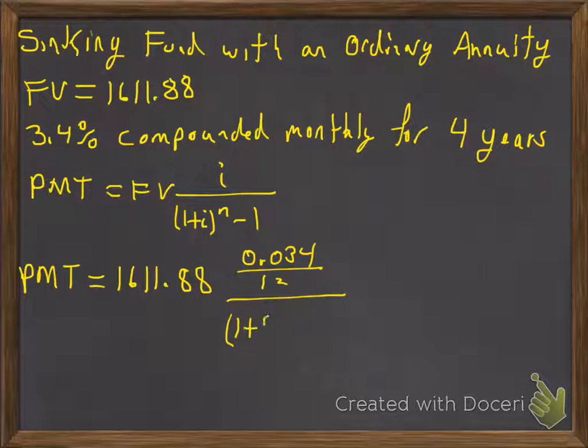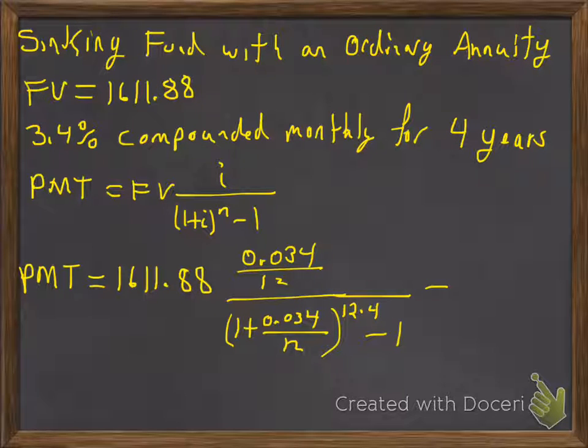divided by (1 plus 0.034 divided by 12) raised to the 12 times 4, that's the number of payments made, and then minus 1.